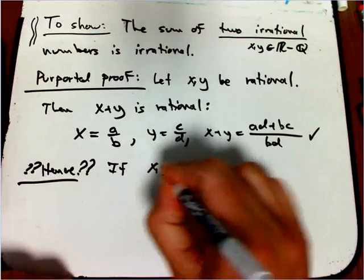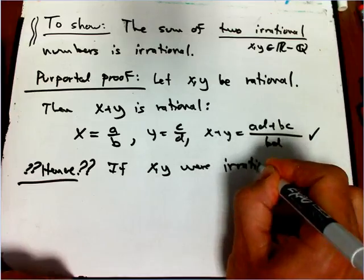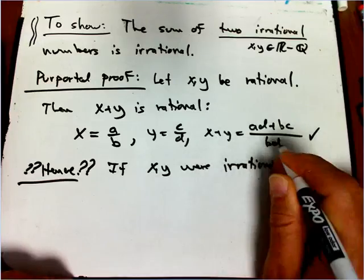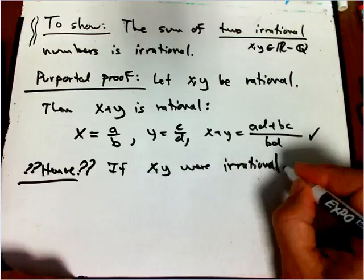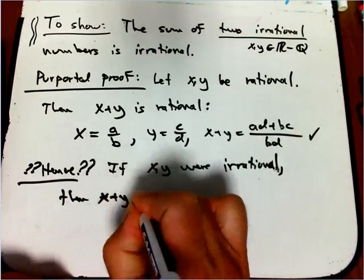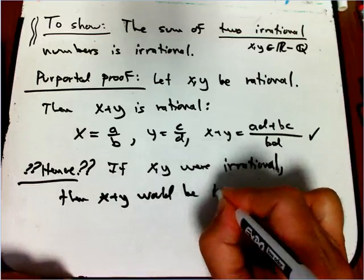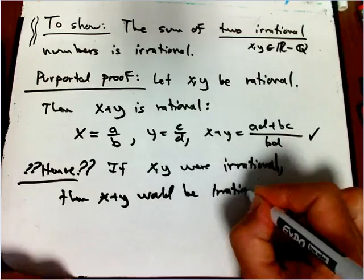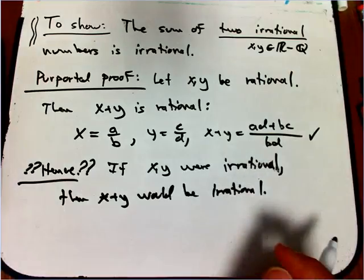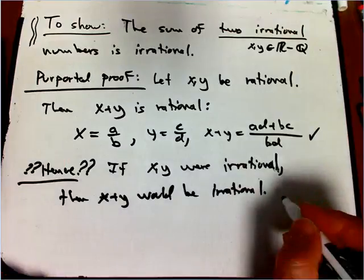if X and Y were irrational, pretty bad A and a bad L, then X plus Y would be irrational. That's just not, not going to fly. That's just no logical reason why you do that.